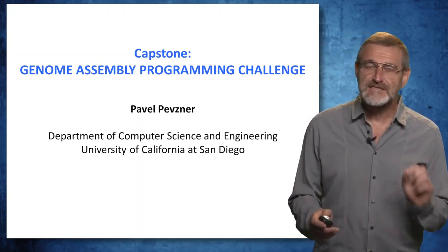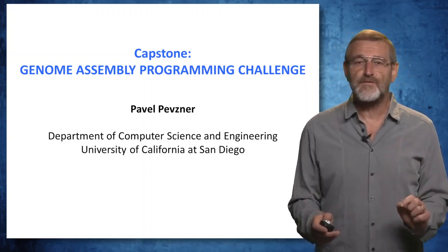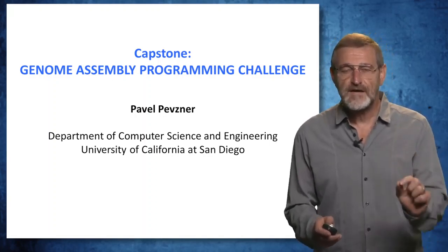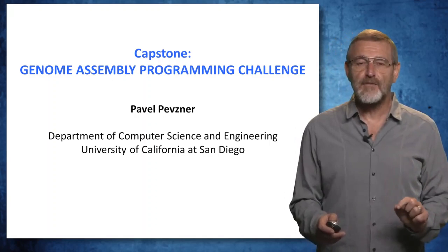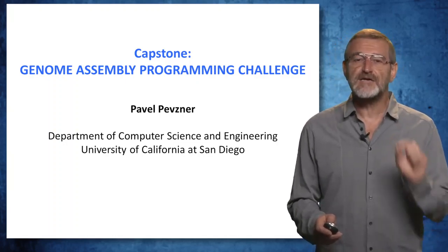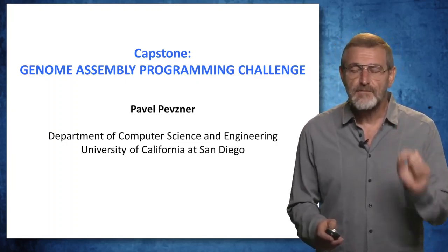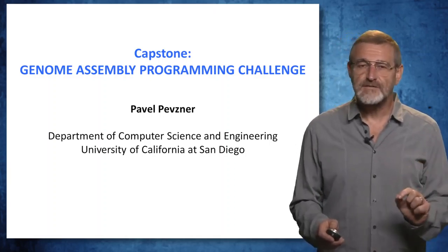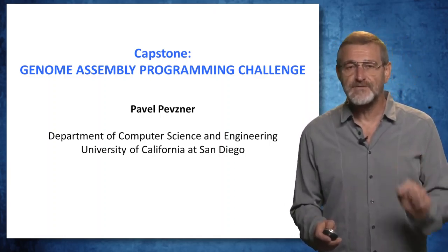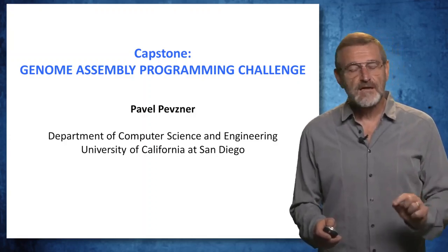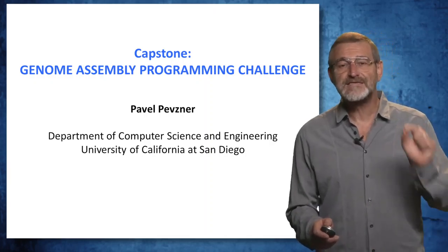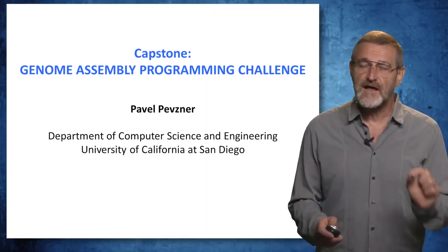I want to explain that there are some differences between the courses you took before and this capstone. In the courses you took before, we presented you with perfectly formulated, clear algorithmic problems. We defined the range of possible parameters, and we specified the algorithms that you need to solve these problems. In the capstone, things will be different. The problems will be loosely defined, and you will need to transform them into exact algorithmic problems. It will not be immediately clear what is the range of the parameters, and we will give you only hints, rather than details, of the algorithms that you need.